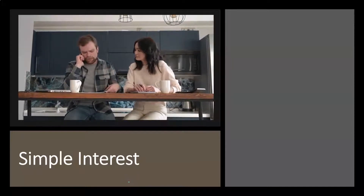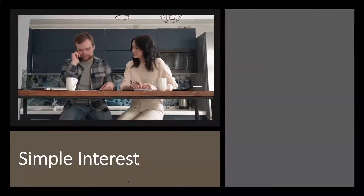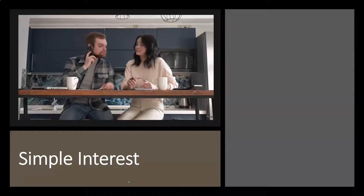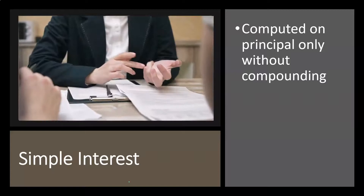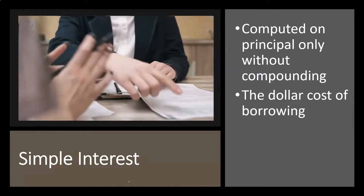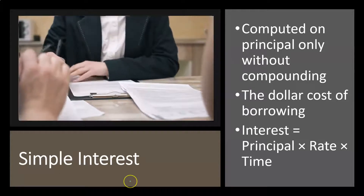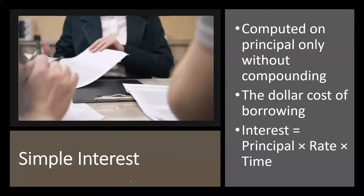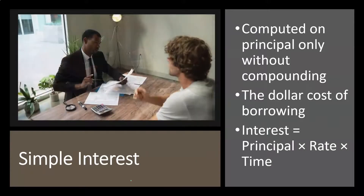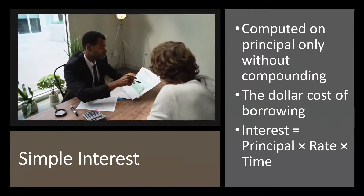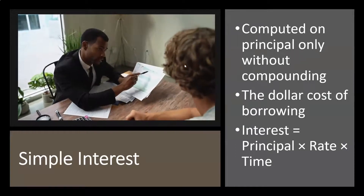Simple interest is the starting point — the building block we need to understand before moving on to other types of interest calculations. It is computed on principal only, without compounding. The dollar cost of borrowing is calculated simply as: Interest = Principal × Rate × Time, or P × R × T.